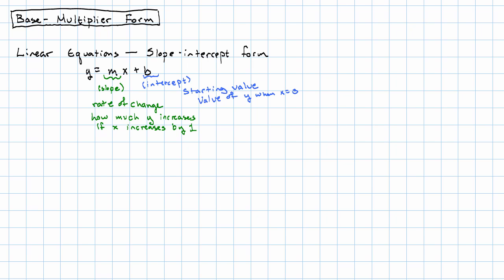We're going to be making a lot of use of the corresponding form for an exponential equation, what we call the base multiplier form. This is the form y equals a number a times a number b to the power x.